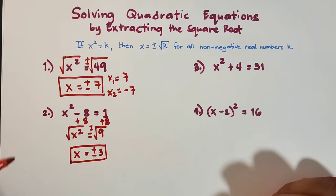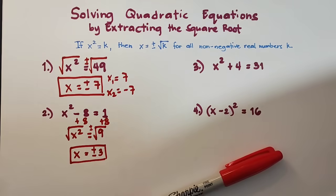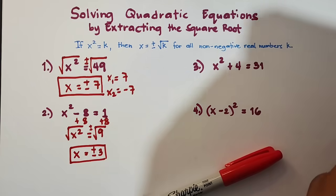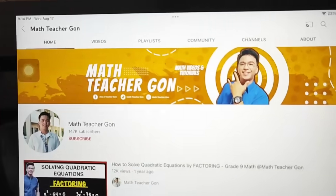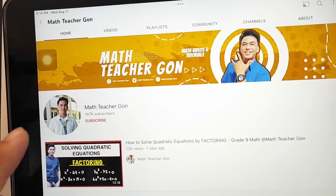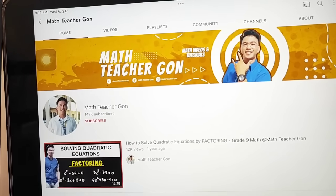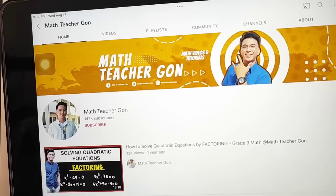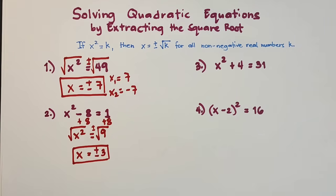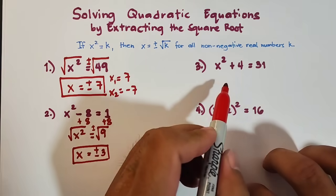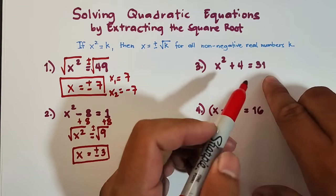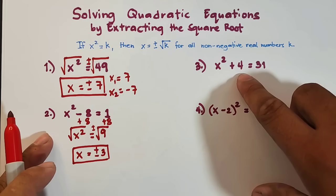For those watching from TikTok, we have our YouTube channel which is Mati Teacher Gon — you can subscribe to watch more videos. Now let's continue with number 3. For number 3 we have x squared plus 4 is equal to 31, which is the same pattern as item number 2.